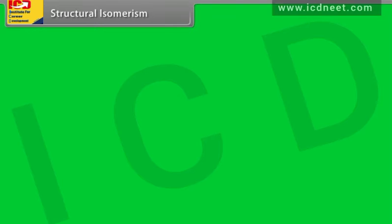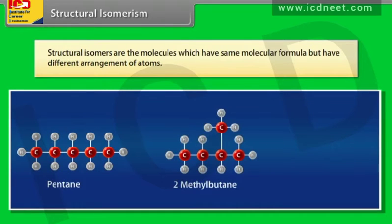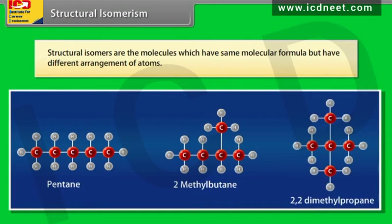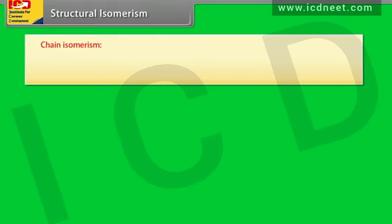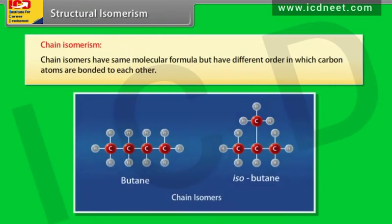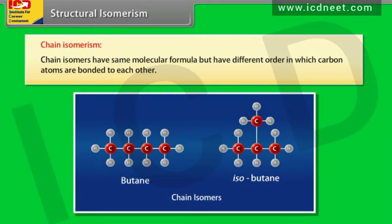Structural isomers are molecules which have the same molecular formula but have different arrangement of atoms. Chain isomers have same molecular formula but have different order in which carbon atoms are bonded to each other.